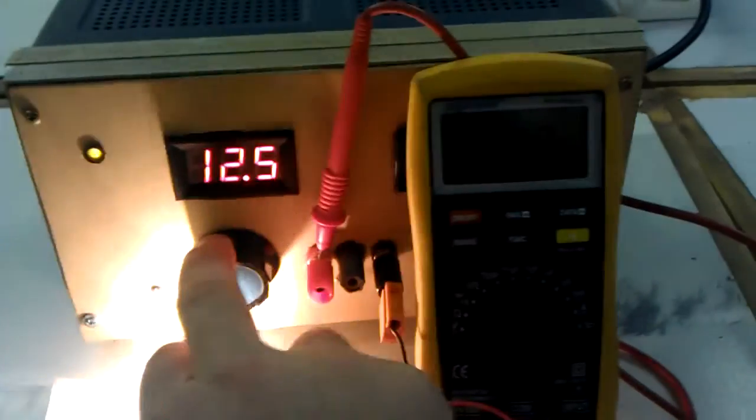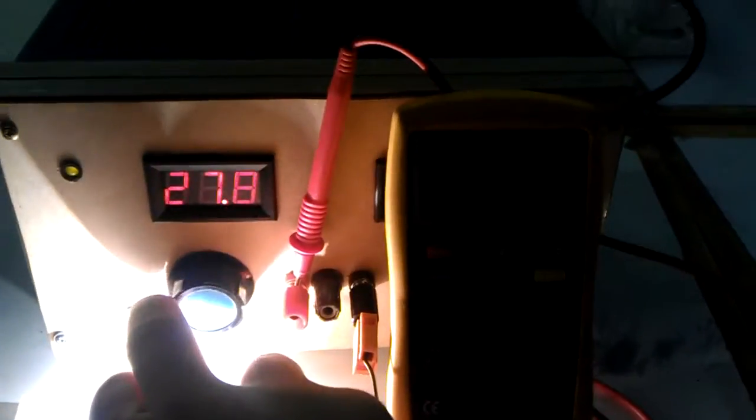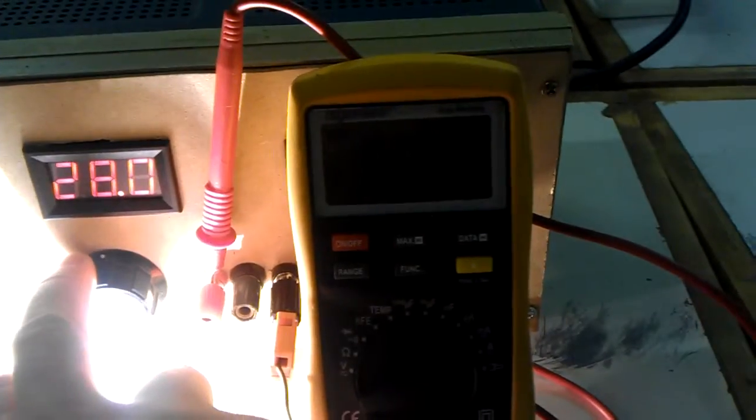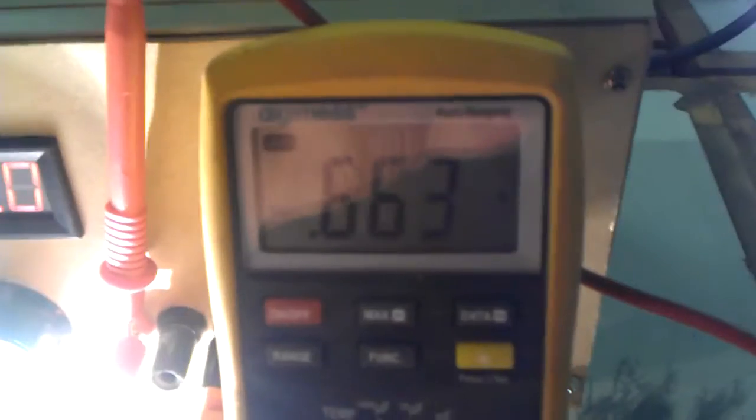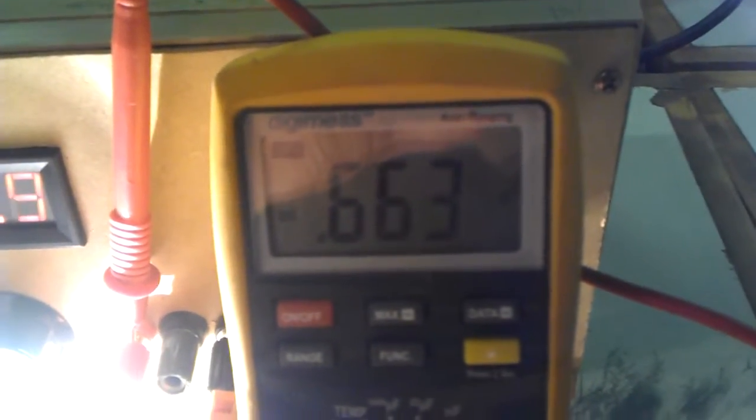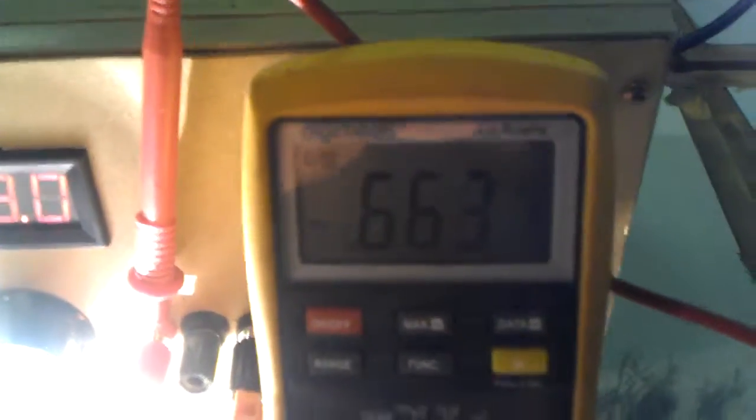Now, if we keep turning up the voltage, we're overdriving the bulb here, and we see it gets very bright. We get 28 volts on the output, and we're measuring 663 milliamps on the output.